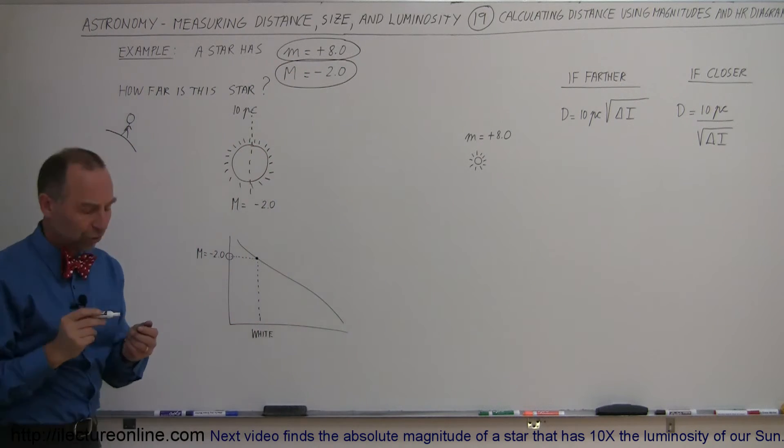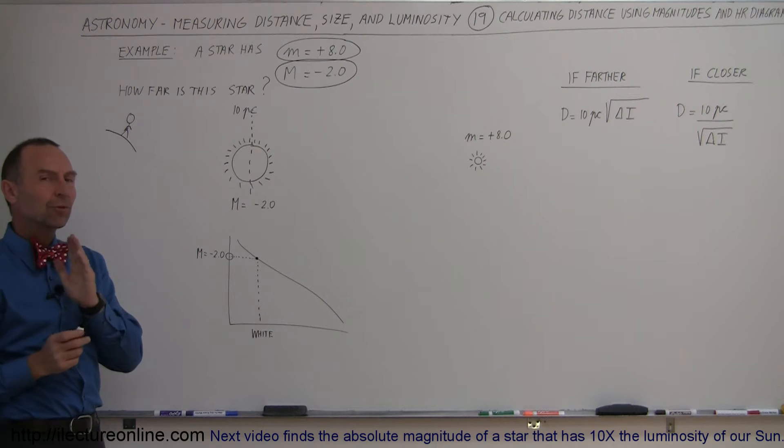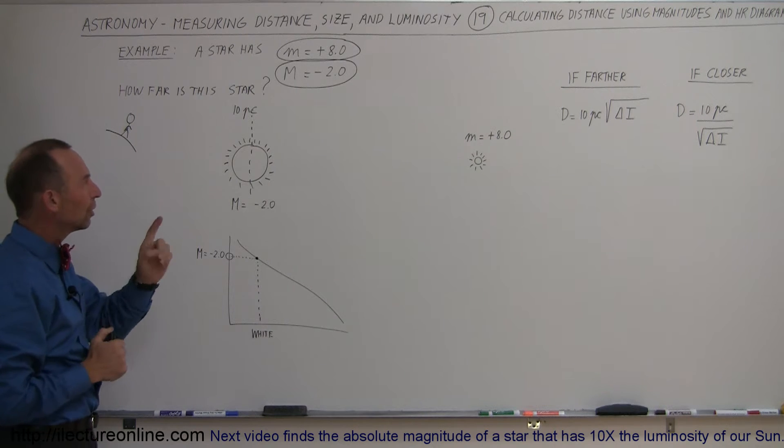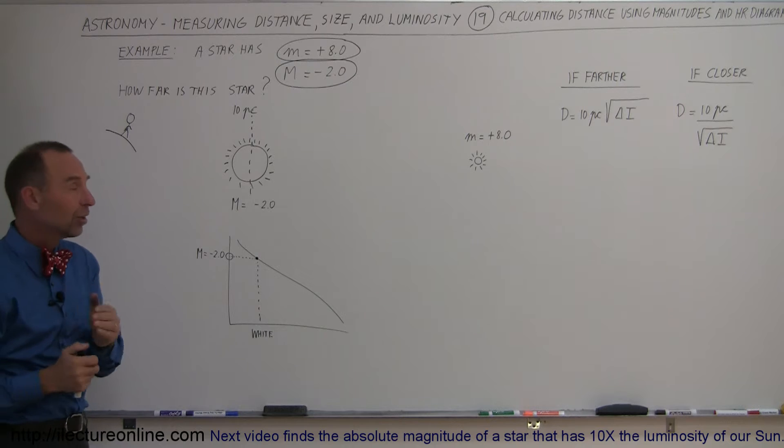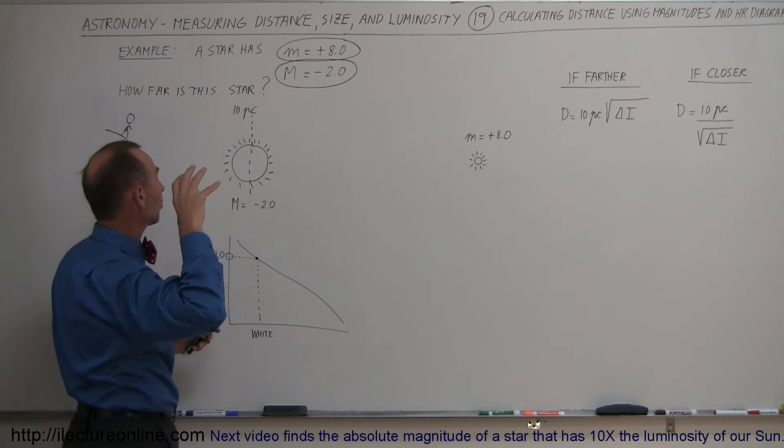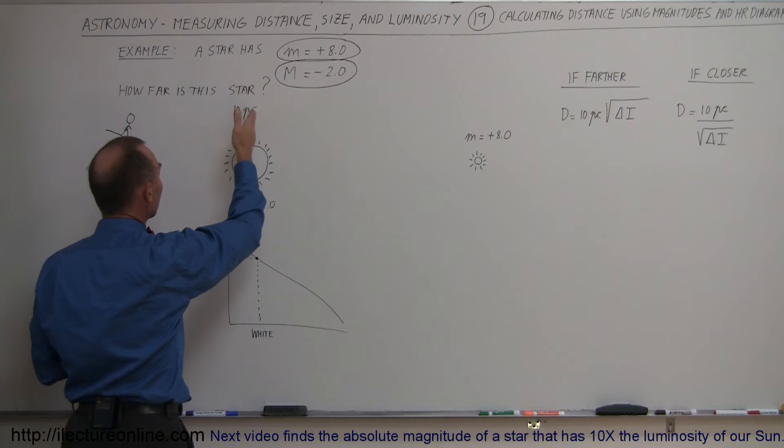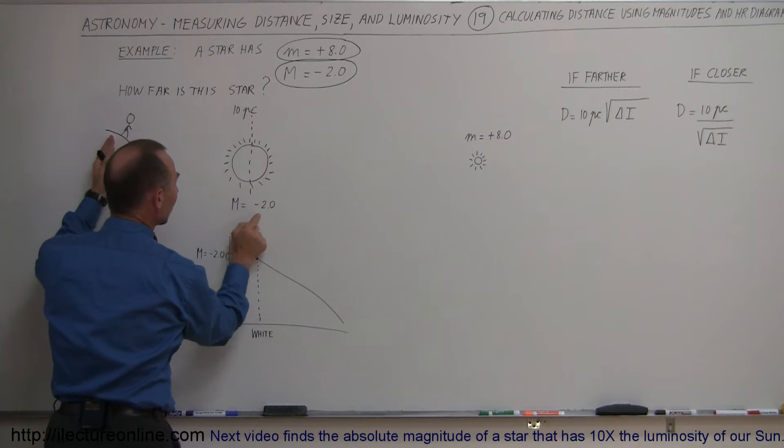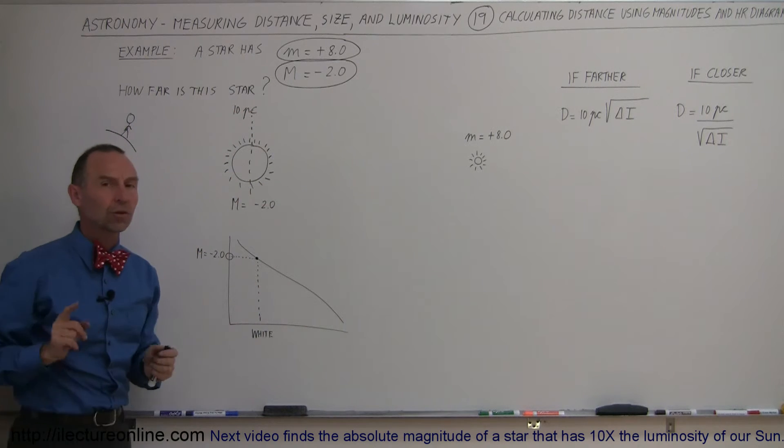Now we have to figure out how far it is to the star. Remember what the absolute magnitude is. The absolute magnitude is the brightness it would appear to us if it was at a distance of 10 parsecs. So if we place a star right at the distance, 10 parsecs away from the Earth, it would appear to us as a minus 2 magnitude star.